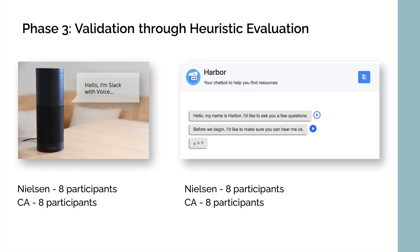In phase three, we used heuristic evaluation, which is a discount usability testing method that identifies usability issues within an interface. In heuristic evaluation, a small set of evaluators is typically used to examine an interface and compare its dialog elements to a list of recognized usability principles. We used heuristic evaluation on two different interfaces: an Amazon Alexa skill, a voice interface, and a text-based chatbot interaction. We used two sets of heuristics — our conversational agent heuristics and Nielsen's heuristics — to determine which was more effective in identifying usability issues.